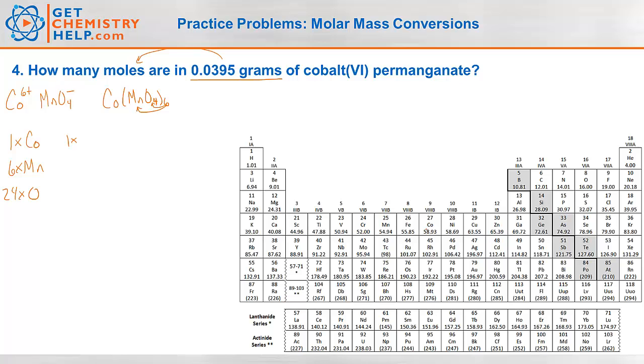So one times the mass of cobalt, cobalt's right here, 58.93. Six times the mass of manganese, that's right here, 54.94. And 24 times the mass of oxygen, which is 16.00. So let's add those all up. So one cobalt is 58.93. Six manganese gives me 329.64. 24 oxygens, that's 384.00. So add those all together. And the molar mass of cobalt(VI) permanganate comes out to be 772.57 grams per every mole.